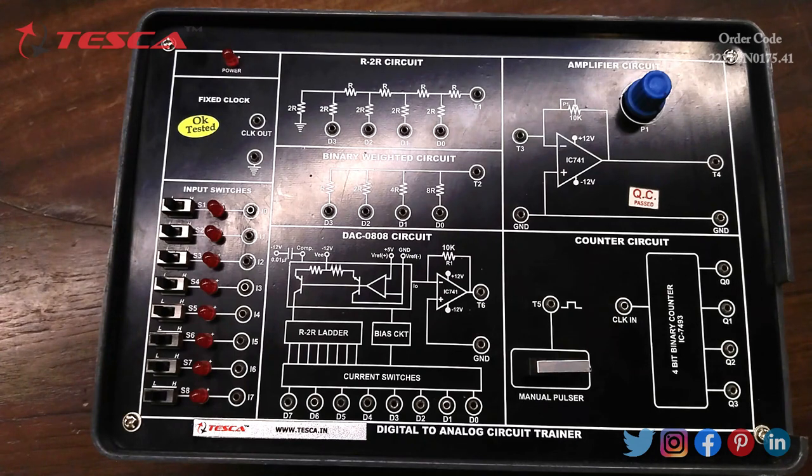Then we have the next section of power supply. In this section, the trainer is provided with onboard fixed DC power supply. All the necessary supply for counter, DAC and op amp are internally provided to the respective circuits.